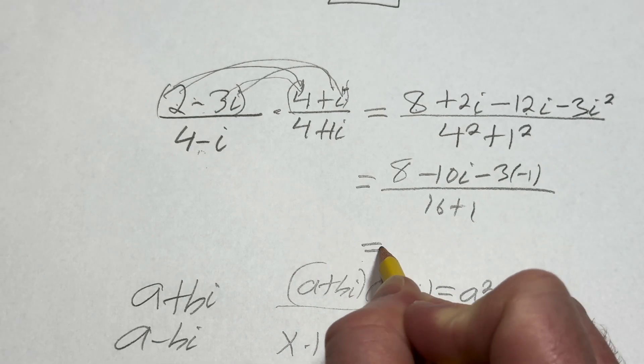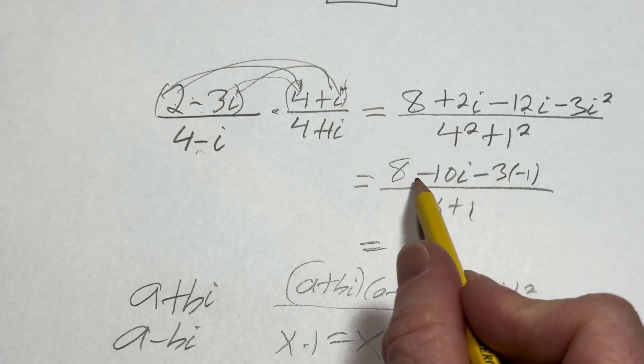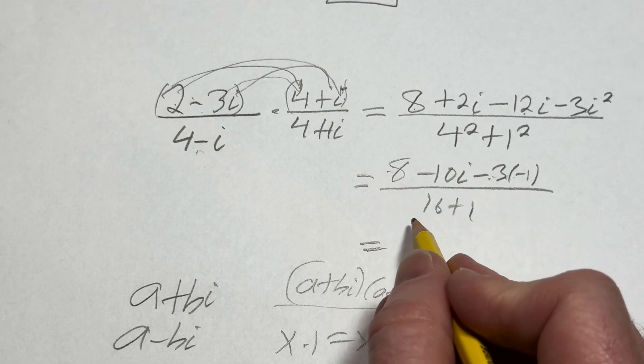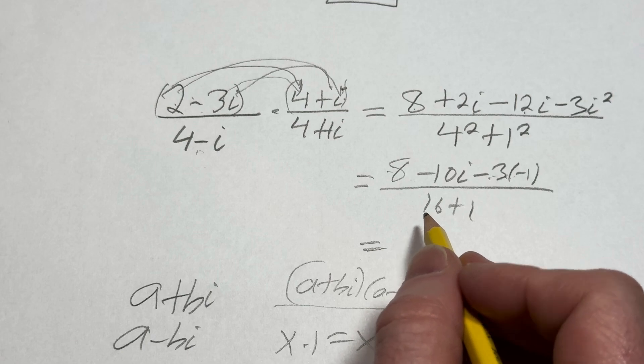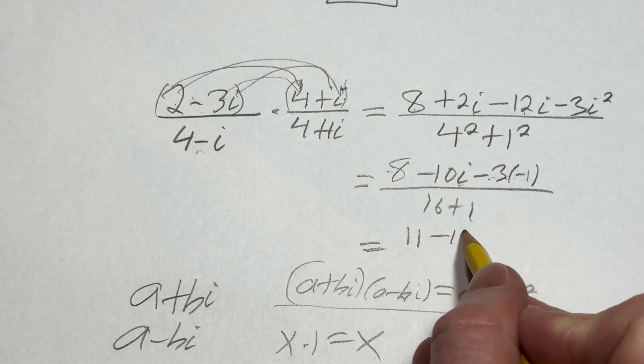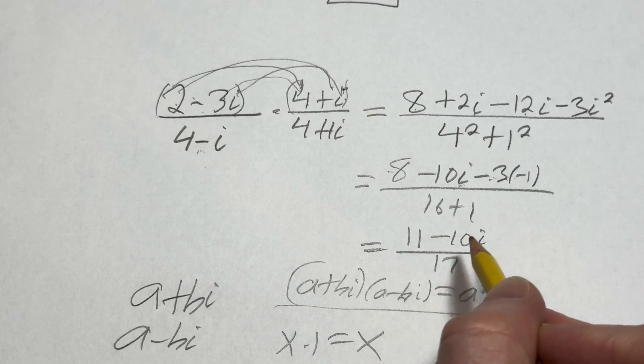This is equal to... We should be able to finish up right here. This is going to be... This is a positive 3, right? So 3 plus 8 is 11. That's going to give us 11 minus 10i all over 17.